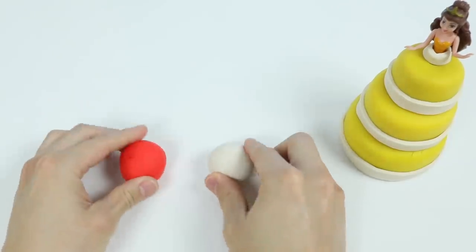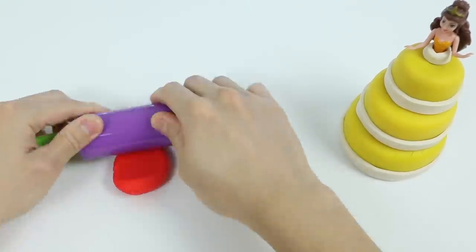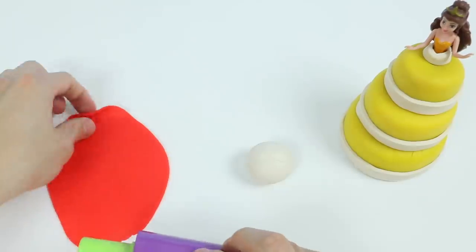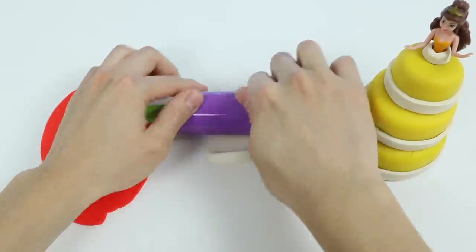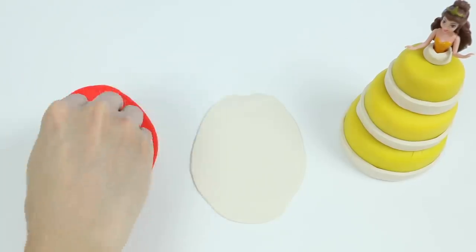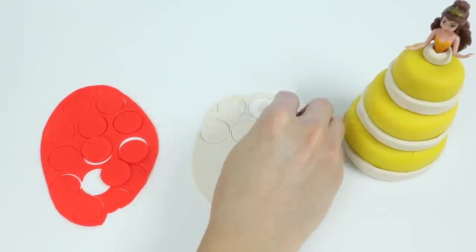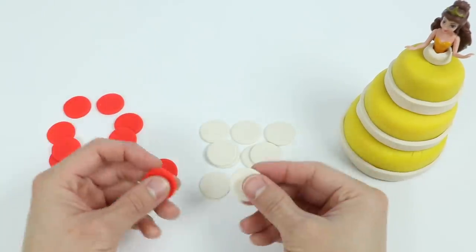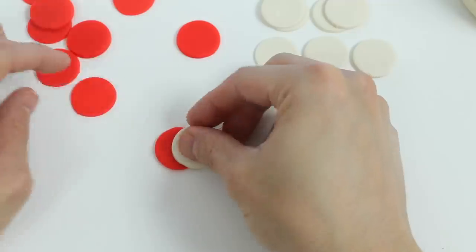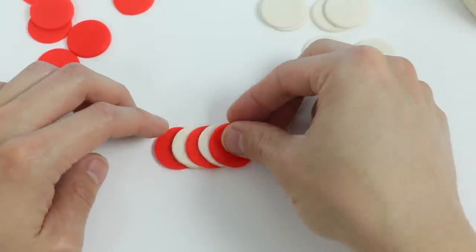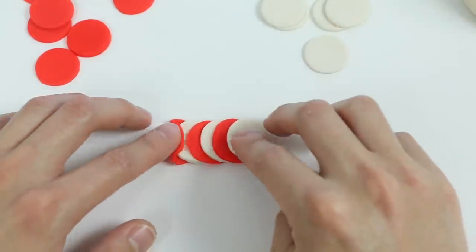All right, now let's roll out some red and white Play-Doh. All right, now we'll use these two colors to make a flower. Just stack them on top like this. If you're following along, that should be good. Now roll it up.